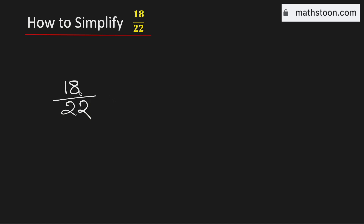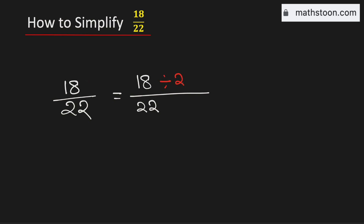In this video, let us simplify the fraction 18 over 22. To do this, at first we will divide both the numbers 18 and 22 by their common divisors. See that both the numbers are even numbers. So to simplify it, we will divide both the numerator and the denominator by 2.